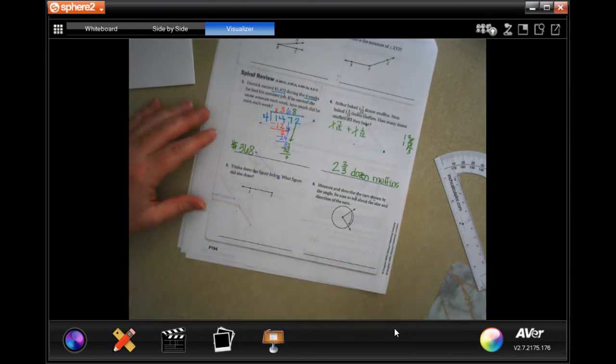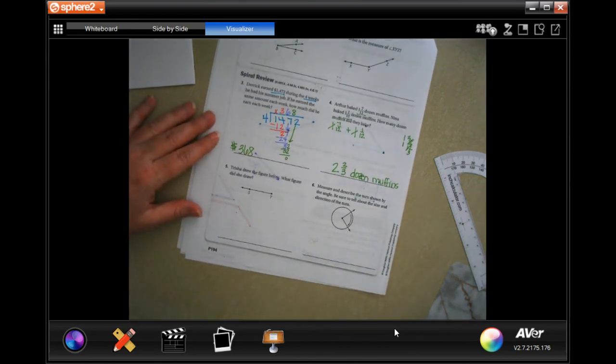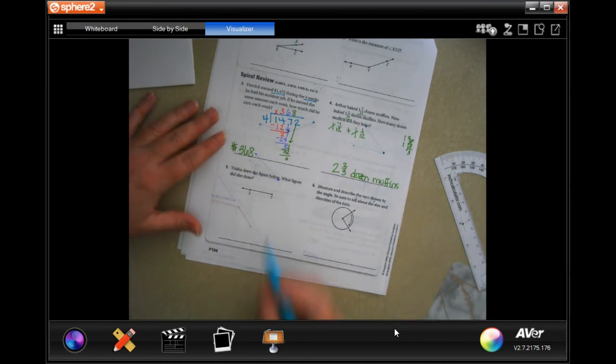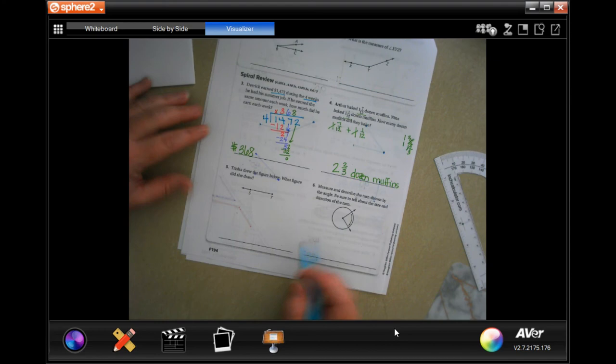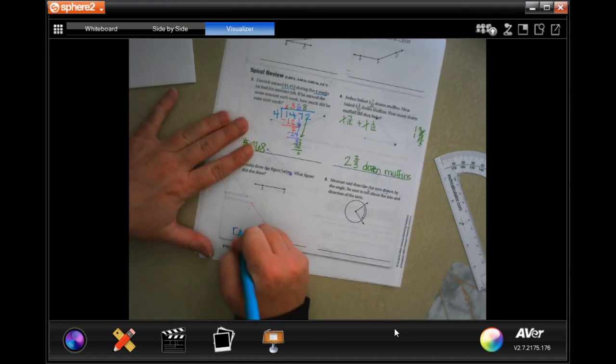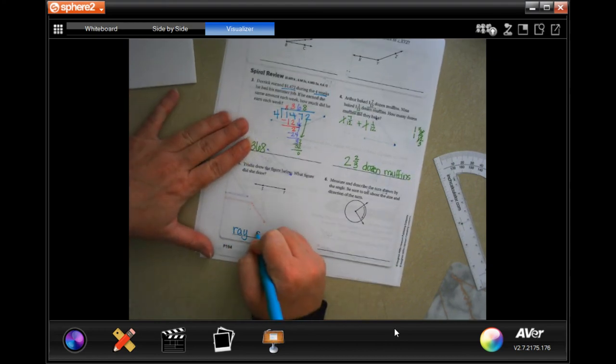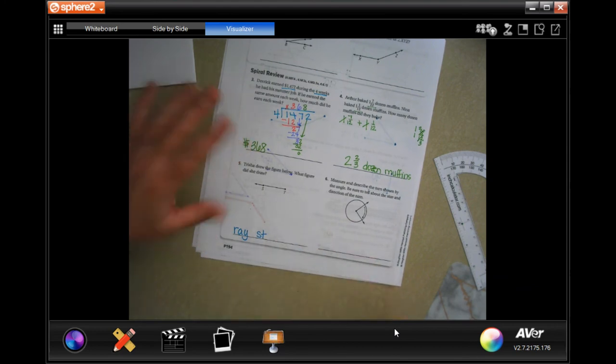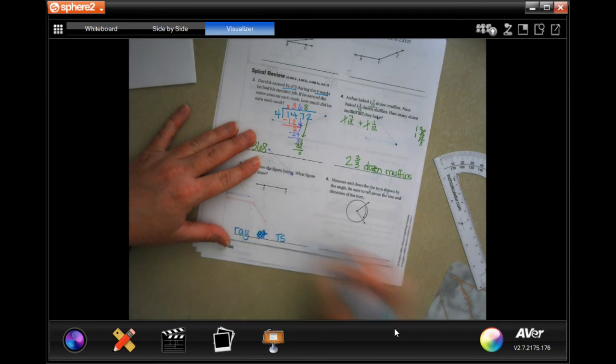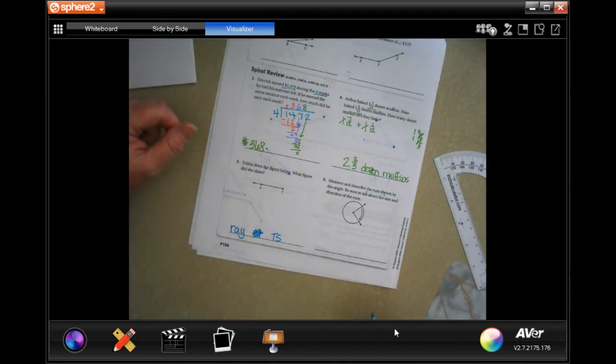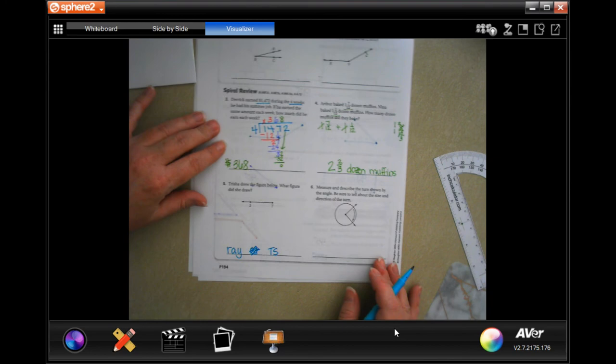Trisha drew the figure below. What did you draw? Well, if you start at one point and you go to another past it with an arrow, it's just like a sun's ray. So I'm going to call it a ray and we have to put ST, or TS, sorry, ray TS, because it started at T and went to S.